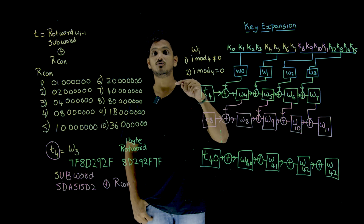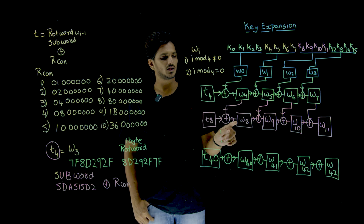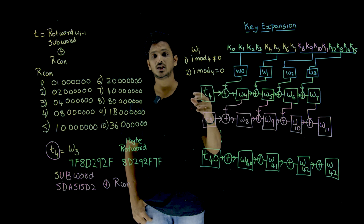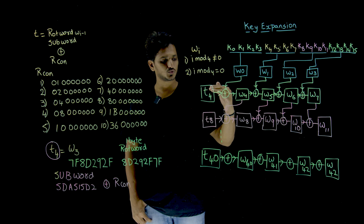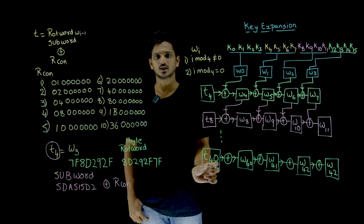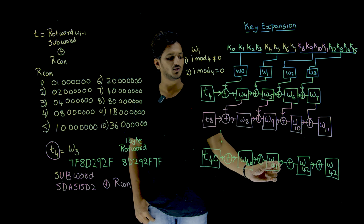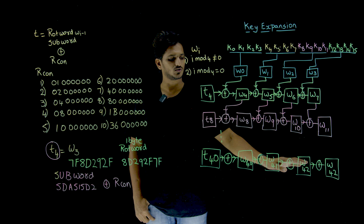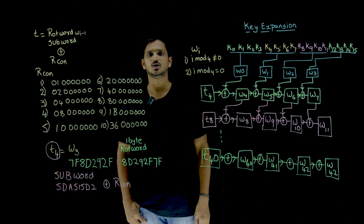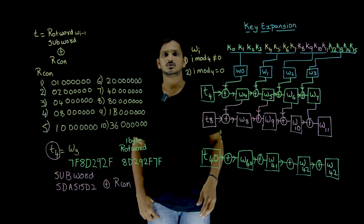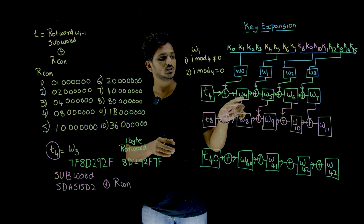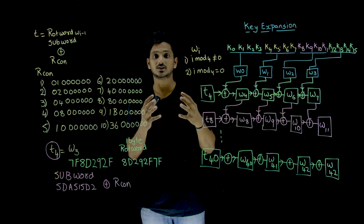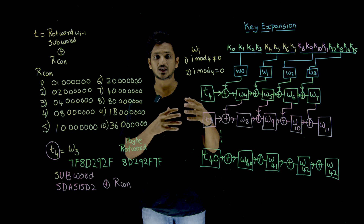Similarly, W8, W9, W10, W11 are used as the key in the next round, N2, and so on. In the last round, the tenth round, we are going to use W40, W41, W42, W43. So now you need to understand how W4, W5, W6, W7 and all these words are generated in the key expansion.